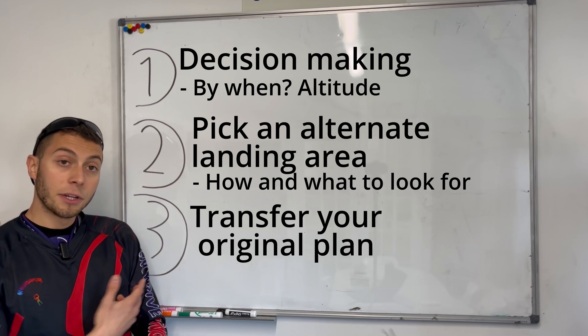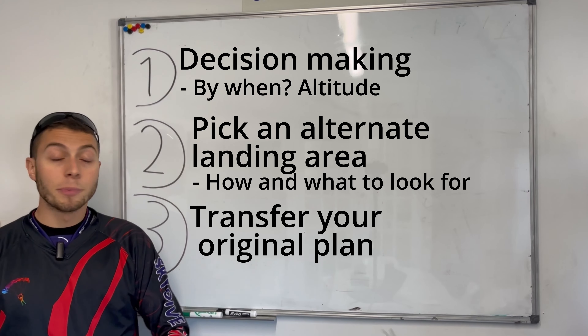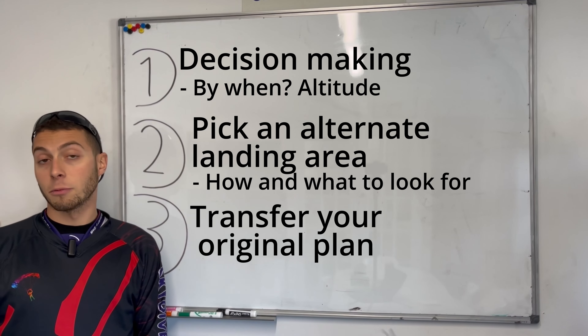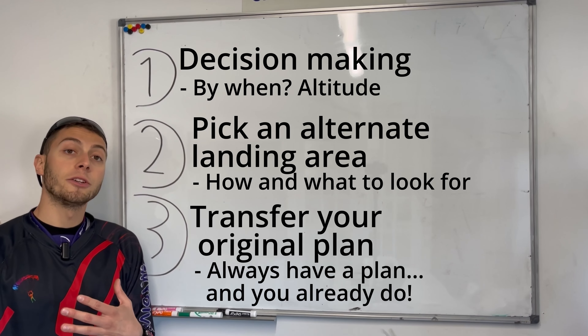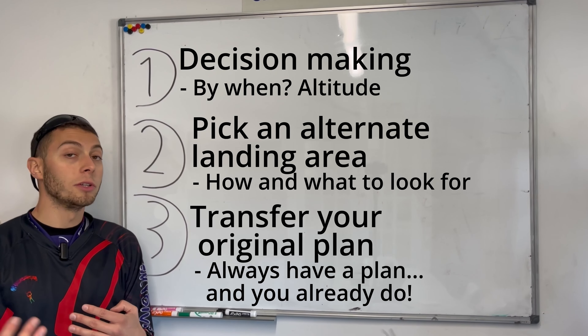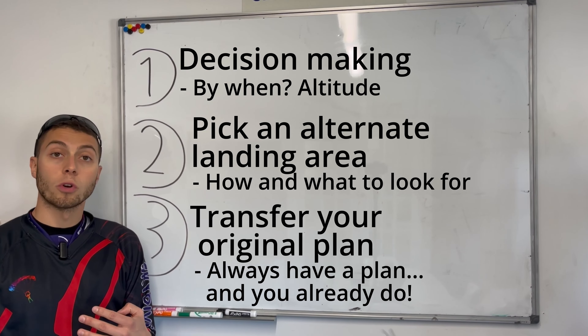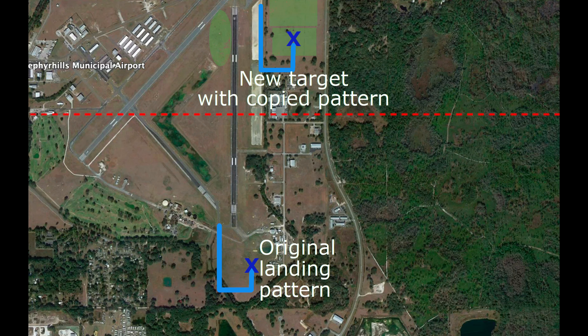As far as copying your pattern, that's self-explanatory — you had a plan already to have a downwind, crosswind, and final, so all that you're doing is taking it from the drop zone and putting it on your new landing area.